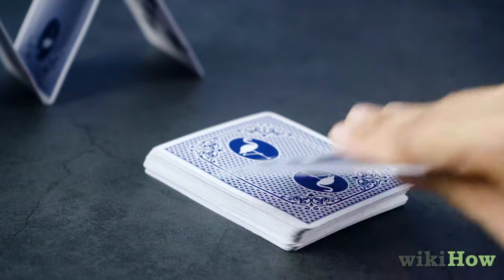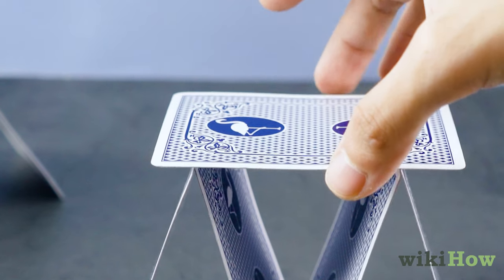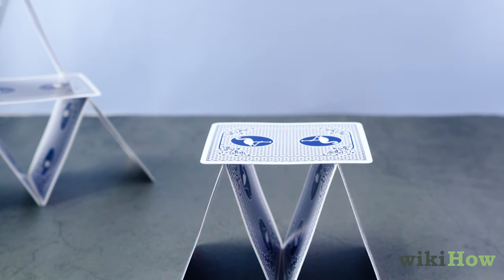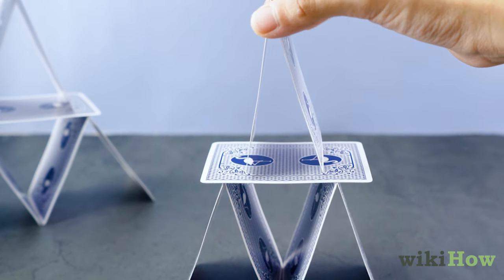Take a card and place it horizontally on top of the two apexes. To begin constructing the second story of your tower, build an apex on top of the horizontal card.